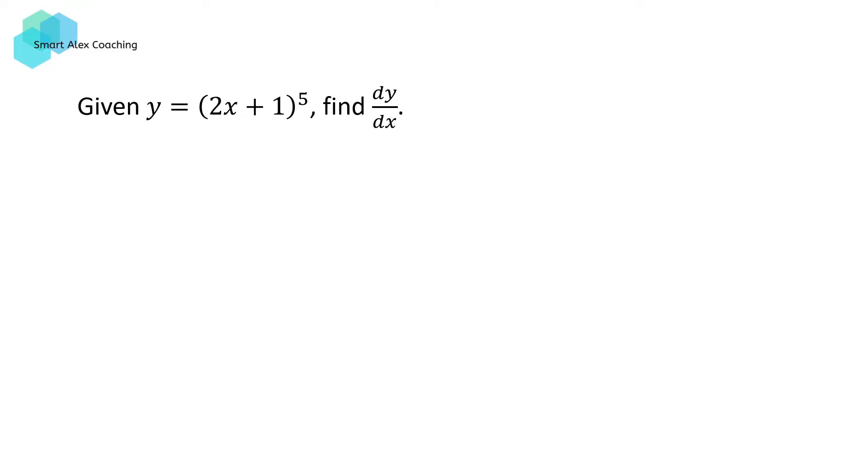Suppose we're given the question, given y equals (2x + 1) to the power 5, find dy/dx. If we didn't have knowledge of the chain rule, the way to go about this would be to expand (2x + 1) to the power 5 and then differentiate it term by term using the power rule. But this process can get quite labor intensive and time consuming. So the chain rule helps us to make our processing a lot more efficient.